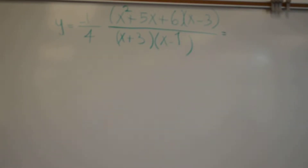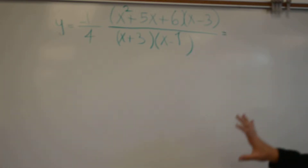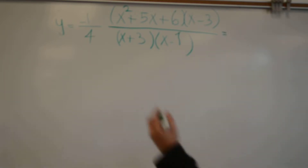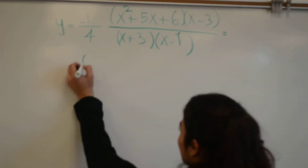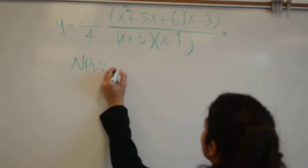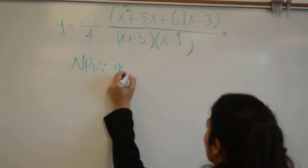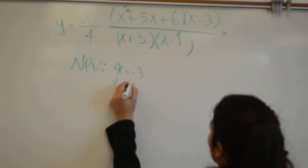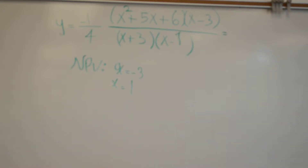So what we need to start off with is we need to find and identify our non-permissible values, which are located in our denominator. Our non-permissible values are x equals 3 and x equals 1.